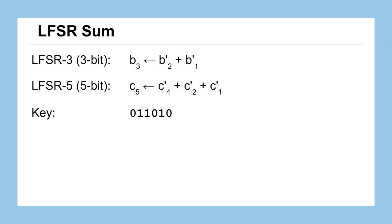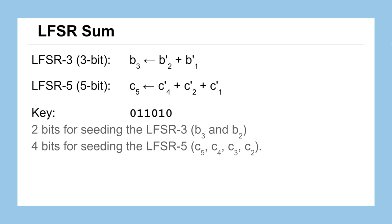We'll communicate the seed values using a 6-digit key, or 6 bits of information. For our example here we'll use 0, 1, 1, 0, 1, 0, and the first two bits will be used for setting the seed value of our 3-bit system - they'll seed the values for bit 2 and bit 3. The last 4 bits of our key will be used for seeding the 5-bit LFSR. So that 1, 0, 1, 0 will set the bit values for bits 5, 4, 3, and 2 respectively.